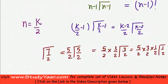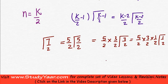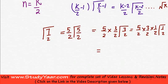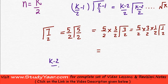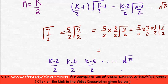Whenever you have your n like this, then this is going to be something like this. You are going to have k minus 2 upon 2, k minus 4 upon 2, k minus 6 upon 2, so on up till you have root pi.